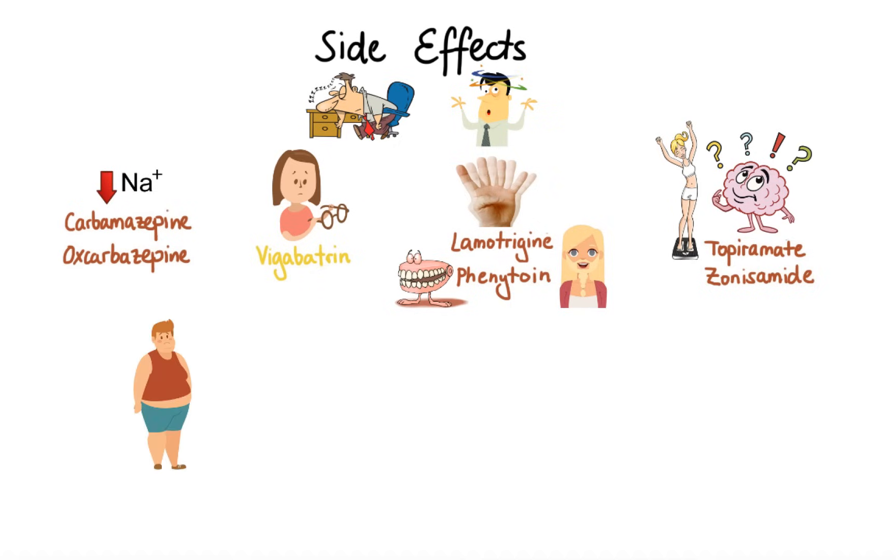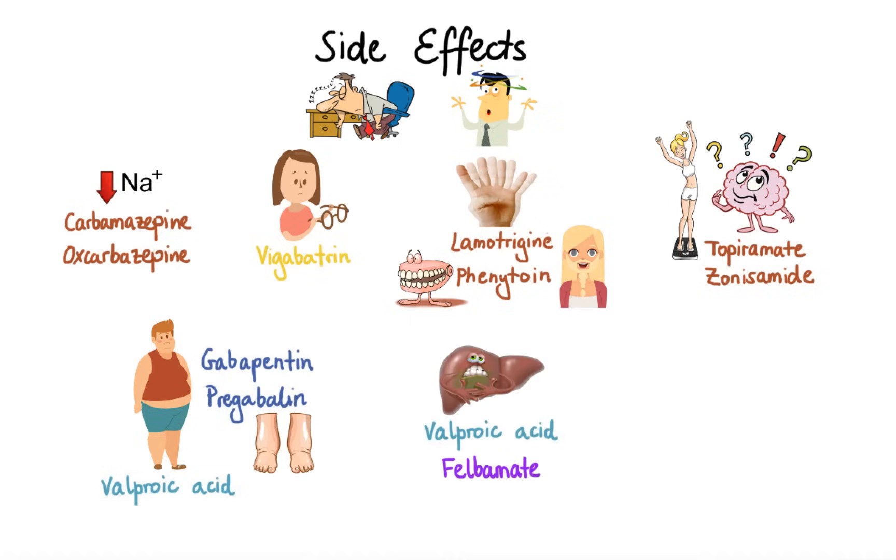Weight gain, on the other hand, can occur most frequently with the use of valproic acid, although it has also been reported with the use of gabapentin and pregabalin, which also happen to cause peripheral edema. In addition to that, both valproic acid and felbamate can cause liver toxicity. In rare cases, the use of felbamate can also lead to a rare but serious condition called aplastic anemia.